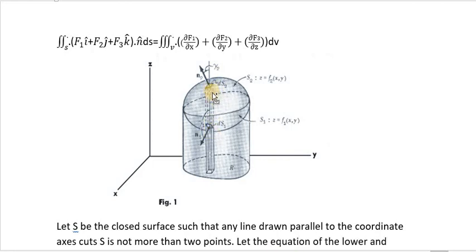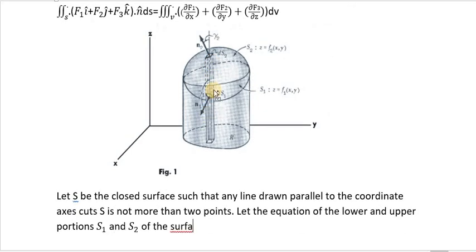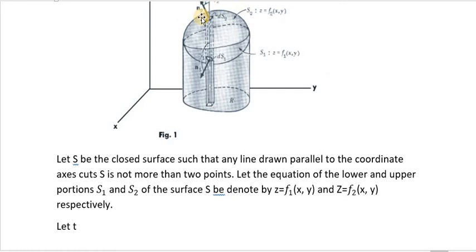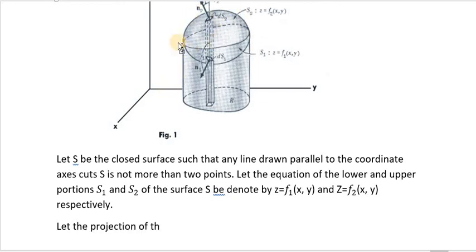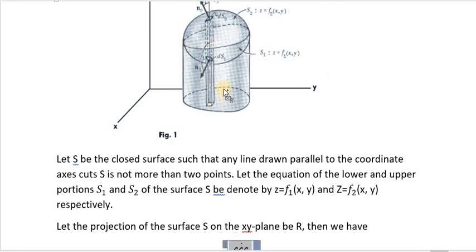Let the equation of the lower and upper portions S1 and S2 of the surface S be denoted z = f1(x,y) and z = f2(x,y) respectively. We have considered a surface S such that any line drawn parallel to any coordinate axis cuts S at not more than 2 points. Let those lower and upper portions be S1 and S2, and let the projection of S on the xy-plane be R.